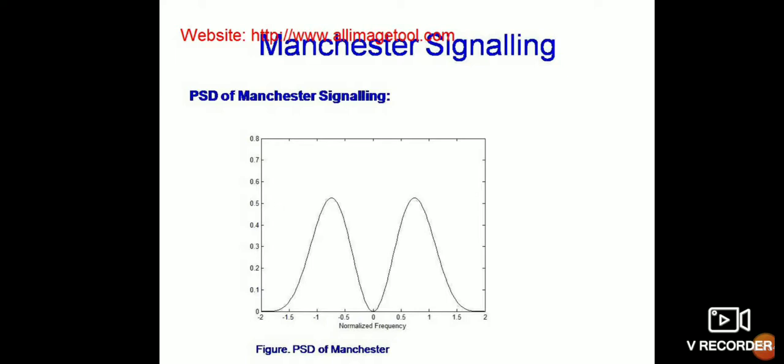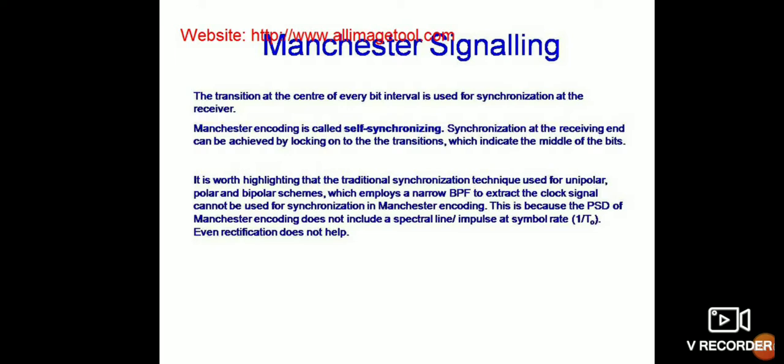Looking at the power spectrum density diagram, the peak occurs at minus 1 and plus 1, with changes of pulse from zero. The transition at the center of every bit interval is used for synchronization. At the receiver, Manchester encoding is called self-synchronization, achieved by locking onto the transition at the center of each bit. Traditional synchronization techniques used for unipolar, polar, and bipolar schemes — which require a narrow PLL to accept the clock signal — cannot be used for synchronization in Manchester encoding.